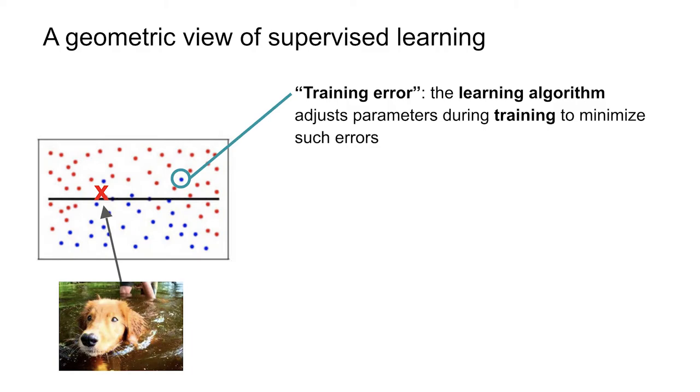The first kind of error is called a training error, and this is an error where one of the actual training data set points is classified incorrectly. Usually, what the supervised learning algorithm does is it tries to reduce the number of such errors, with some caveats. This is called a training error.